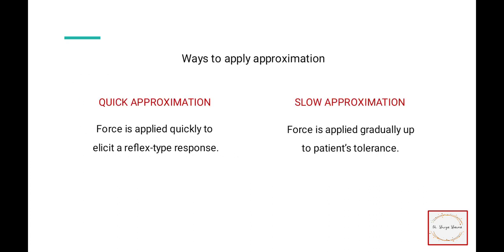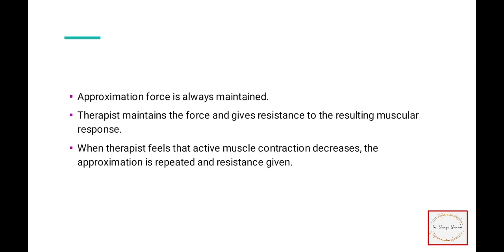There are two ways to apply approximation: quick and slow. In quick approximation, force is applied quickly to elicit a reflex type response. In slow approximation, force is applied gradually to patient tolerance. The approximation force is always maintained, and the therapist maintains the force and gives resistance to the resulting muscular response.